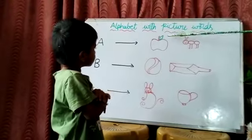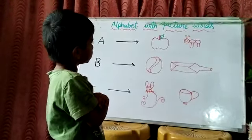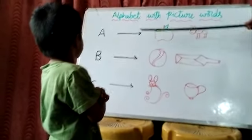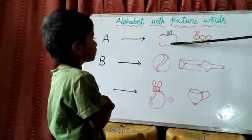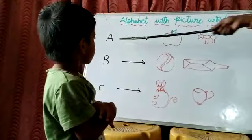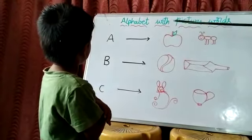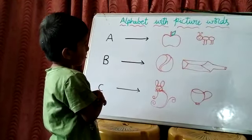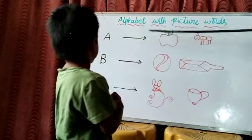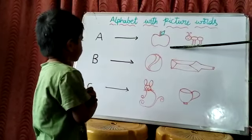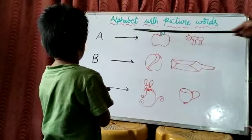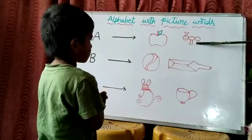Alphabet with picture words. A for Apple. A for Ant. A for Apple. A for Ant.